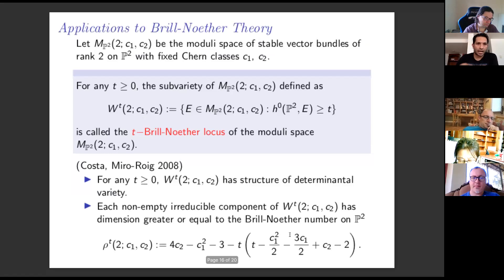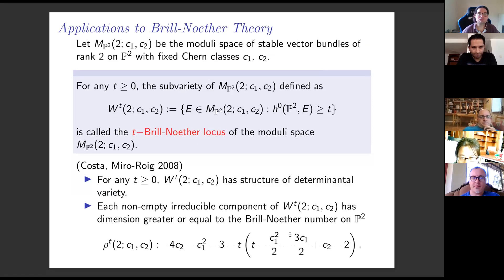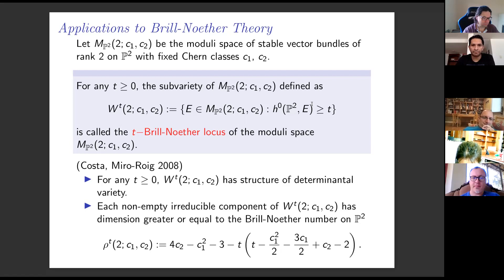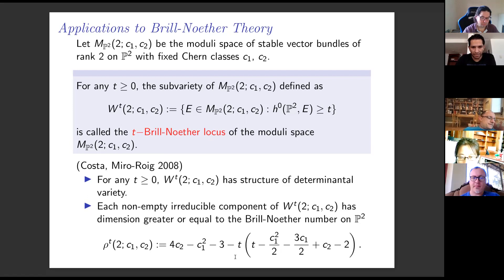I would like to finish with an application of the stratification related to Brill-Noether theory. In general, Brill-Noether theory studies the geometry of certain subvarieties. For any T greater than or equal to zero, the Brill-Noether locus is defined as the set of stable vector bundles having at least T independent sections. Laura Costa and Rosa Miró-Roig proved that the Brill-Noether locus has the structure of a determinantal variety, and the expected dimension of the Brill-Noether locus is given by the generalized Brill-Noether number.